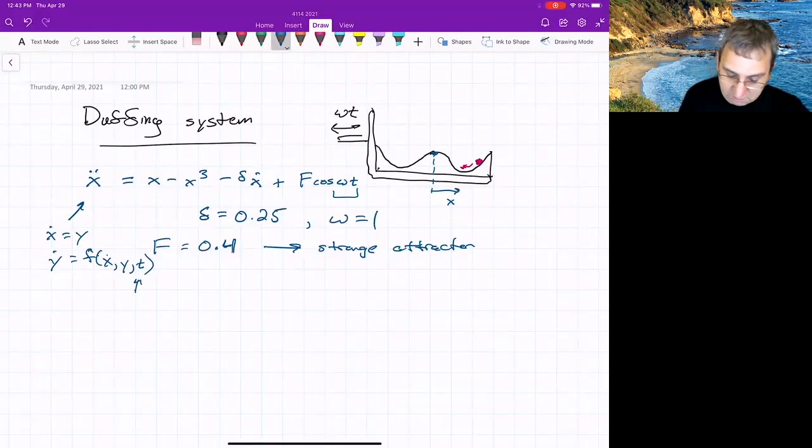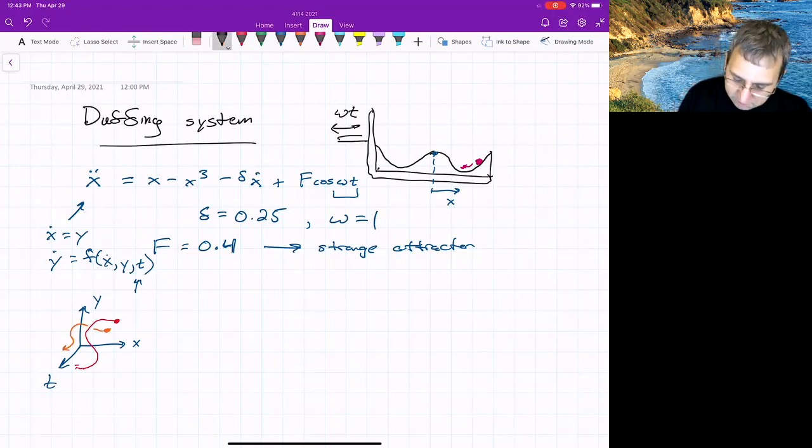Some people call it the extended phase space. So there's like X, Y, and then time. And in that space, if you start with initial conditions, they might go places, but they won't intersect each other. So maybe they'll just go around. We have enough dimensions here, three dimensions for ODE. So that's enough for chaos. And it lends itself to laboratory experiments.